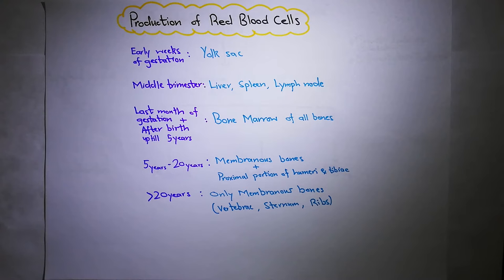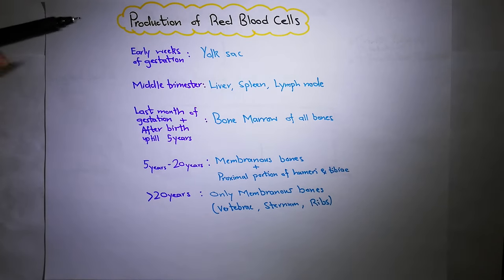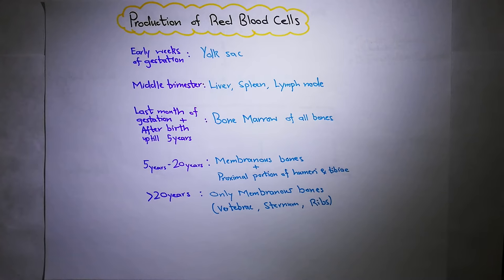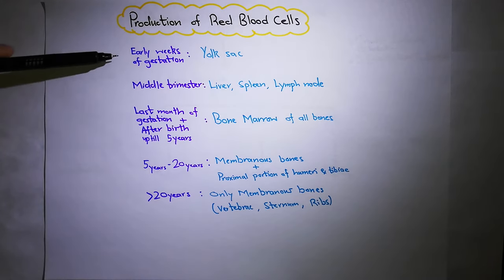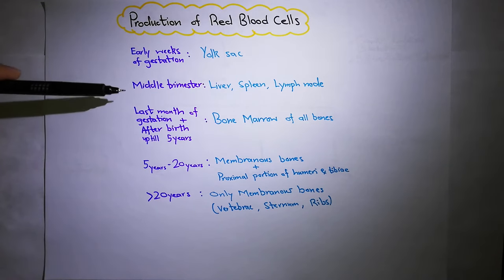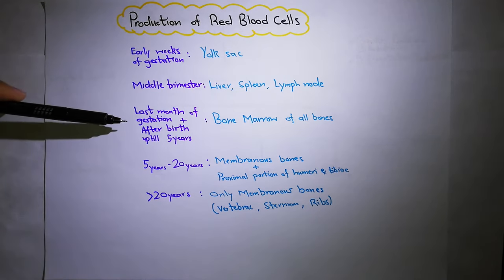Where are RBCs from? Bone marrow of which bone — all bones or specific bones? And during gestational life, where do RBCs come from? Answer these questions. We divide this into 3 parts: start of pregnancy, then middle trimester, and then last months of gestation.